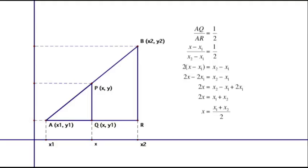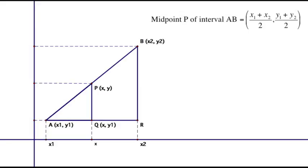We now have the formula to find the X value of the midpoint. By following the same process with the Y axis we can find the formula for the Y value. The complete formula to find the coordinates of the midpoint is (X1 plus X2) over 2 for the X value and (Y1 plus Y2) over 2 for the Y value.